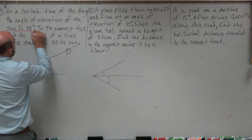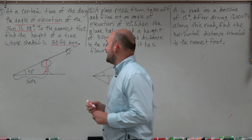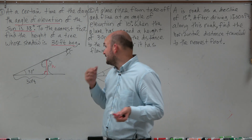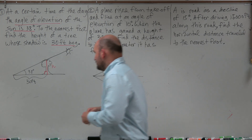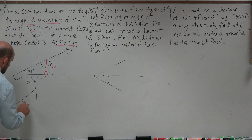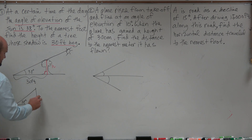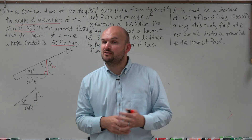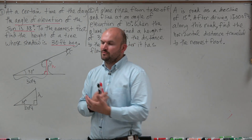So we have the sun at 38 degrees angle of elevation, the shadow is 30 feet long, and we want to find the height h of the tree. I'll draw my triangle: 38 degrees, a right angle going straight up, 30 feet along the base, and we're solving for h. I need to determine my trigonometric function — sine, cosine, or tangent.